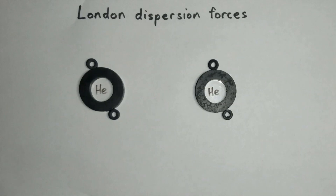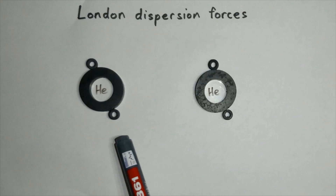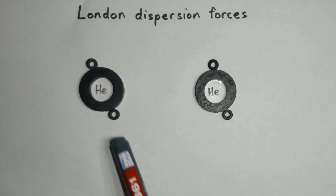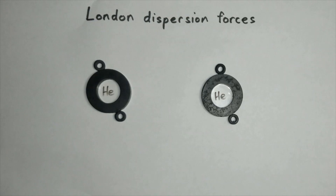London dispersion forces are forces of attraction that can operate between all atoms and molecules. These forces are much weaker than all other types of bonding. I'm going to use two helium atoms with two outer electrons shown by ring magnets to demonstrate how London dispersion forces arise.